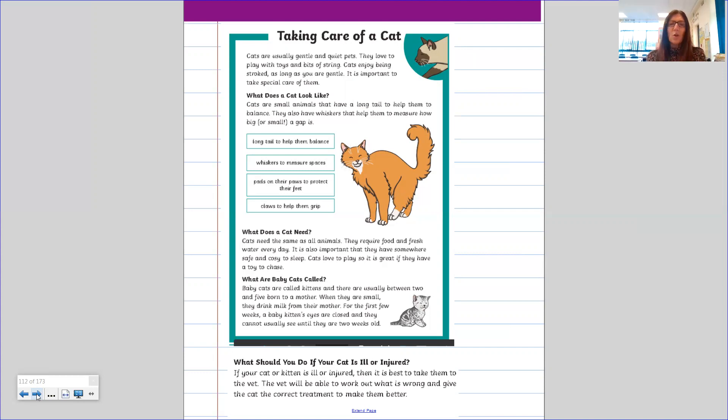What should you do if your cat is ill or injured? And injured means if the cat is hurt. So if your cat or kitten is ill or injured, then it is best to take them to the vet. The vet will be able to work out what is wrong and give the cat the correct treatment to make them better.